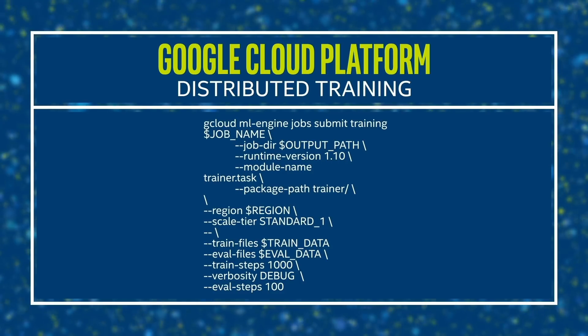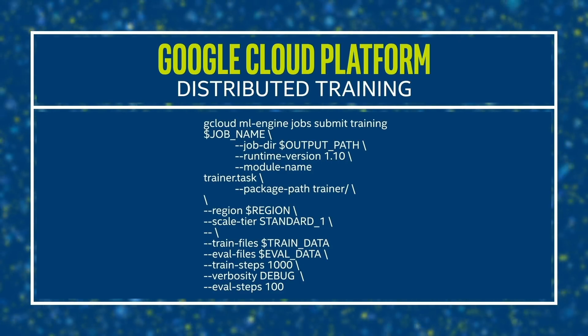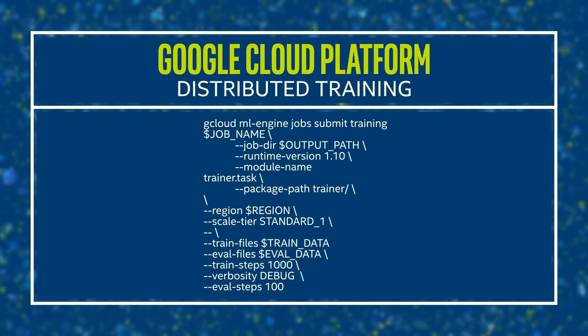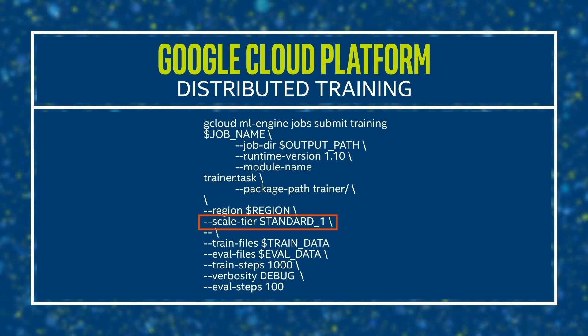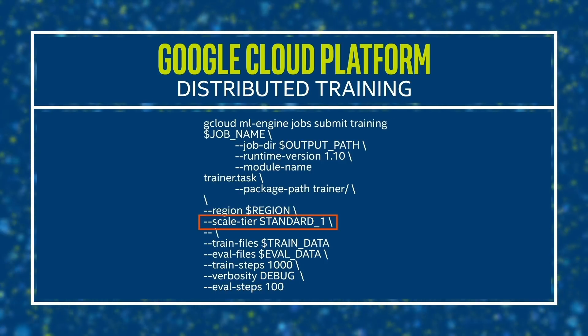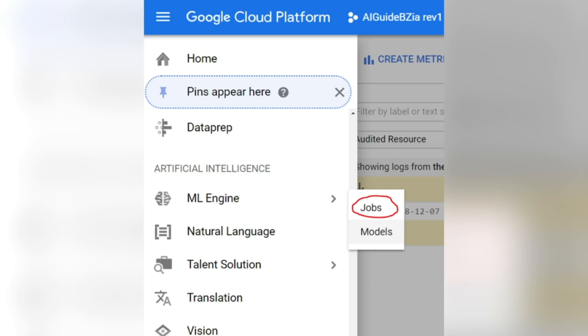Now that the whole platform is ready, you will start running your distributed training in the cloud. To do that, you will have to assign a job name and an output path to dump your results, as well as select the scale tier parameter to standard one to use an all CPU-based configuration. Once the job has been submitted, you can monitor the progress on the GCP console. After training is completed, you can run inference in a similar manner. The last step is to clean up your cloud storage to avoid incurring additional GCP charges.